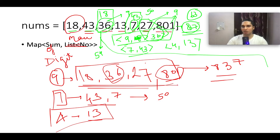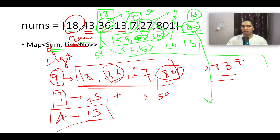While iterating over the array, we keep track of the maximum sum generated, which is 837. We only store the maximum element seen so far for each digit-sum key in the map. The time complexity of this approach is O(n) and the space complexity is also O(n) because we are creating the map.